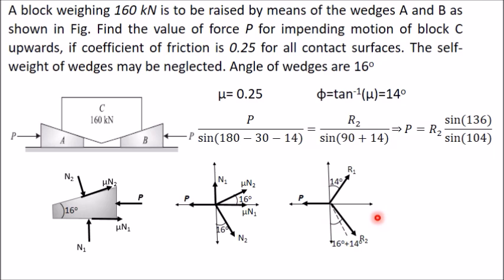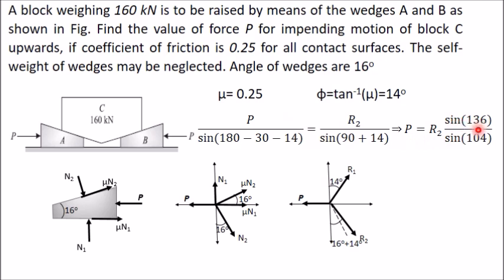Now applying Lami's theorem to wedge B, there are only three forces: P, R1, and R2. So P divided by sine of the angle between R1 and R2 equals R2 divided by sine of the angle between P and R1. The angle between R1 and R2 is 180° − 14° − 14° − 16° = 136°, and the angle between P and R1 is 90° + 14° = 104°. Therefore P = R2 × sin136° / sin104°.